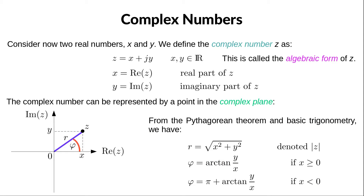The modulus r is the hypotenuse of a right triangle with base x and height y, so the Pythagorean theorem tells us that r is the square root of x squared plus y squared. From basic trigonometry, the tangent of the phase phi is equal to the opposite length over the adjacent length, so phi is the arctangent of y over x. Pay attention that the tangent is a function with a period of pi defined from minus pi over 2 to plus pi over 2, so if x is negative, we must add pi to the result.